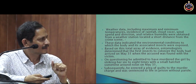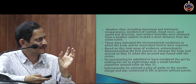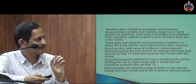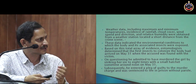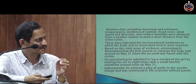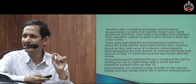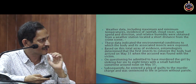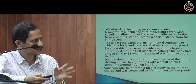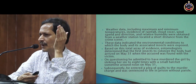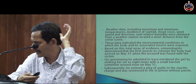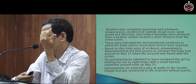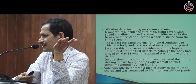Based on this total array of evidences, it was determined that the first insects to colonize the body had arrived on May 31st, when the accused was found with the victim. On questioning, he admitted to have murdered the girl by striking her six to eight times with a small hatchet sometime around noon on May 31st. Subsequently, he entered a plea of guilty to the murder charge and was sentenced to life in prison without parole. This is an authentic case, not fiction.